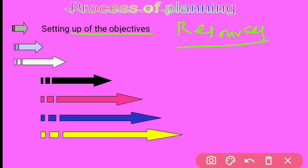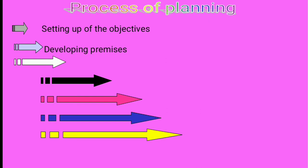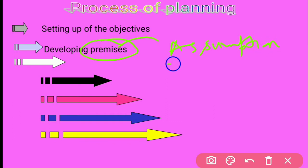The second step of planning is developing premises. Premises means making assumptions regarding the future of the organization — what will happen in the future. Some assumptions are made by the planning manager because it helps in achieving the objective of the organization. Premises are the base on which plans are made; it is actually a kind of forecast.